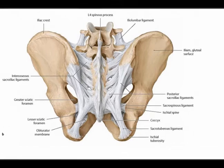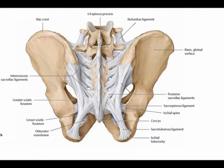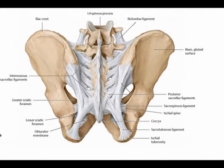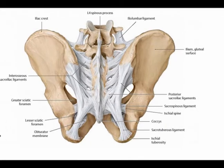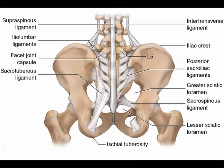The interosseous sacroiliac ligament forms the main connection between the sacrum and the ilium. It is the strongest ligament in the body and prevents anterior and inferior movement of the sacrum.